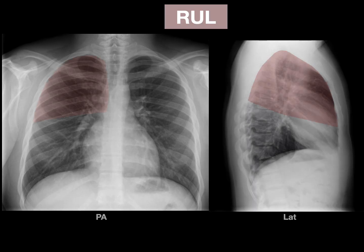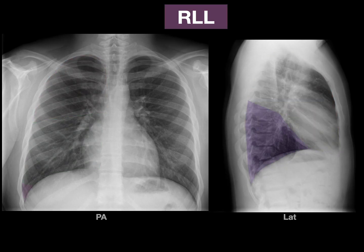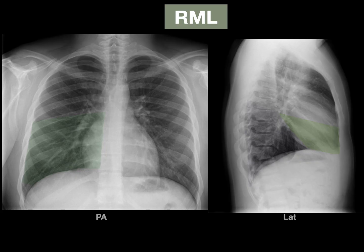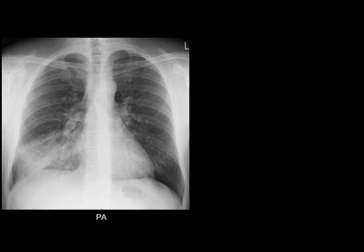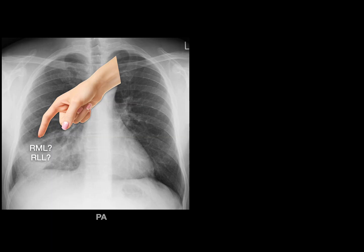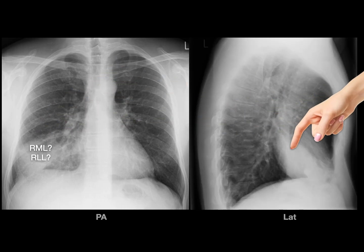On chest X-rays, there's the right upper lobe, the right middle lobe, and the right lower lobe. Notice the right lower lobe in the PA view is barely visible because it's primarily in the back, as the lateral view shows. If there's a consolidation — some gunk inside the lung — in the PA view, you can't always tell if it's in the right middle or right lower lobe. The primary way to determine this is to look at a lateral view. This is why it's important to use both PA and lateral views to identify lobes on chest X-rays.